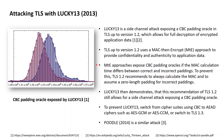TLS 1.2 was actually well aware of this and specified that in case an incorrect CBC padding is present, the implementation should assume a zero-length padding and calculate the MAC anyway. The TLS 1.2 RFC 5246 even mentions that this may leave a small timing channel, but that this timing channel was believed to not be large enough to exploit.